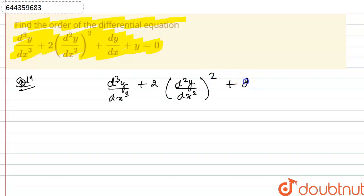Whole square plus dy by dx plus y is equals to 0. Firstly we will see what is the order of a differential equation.